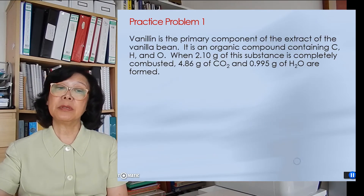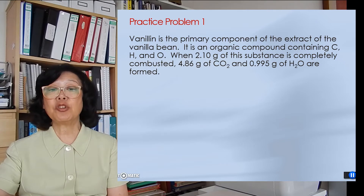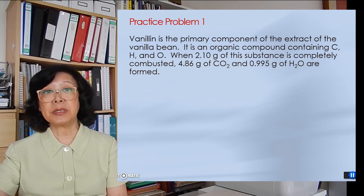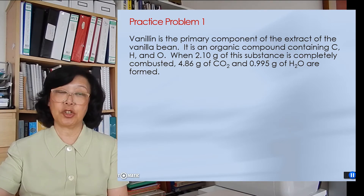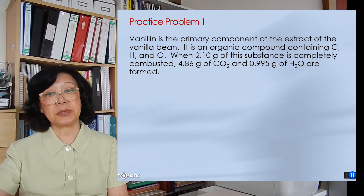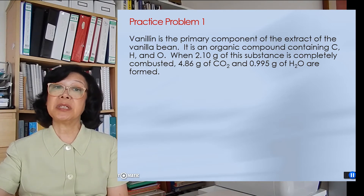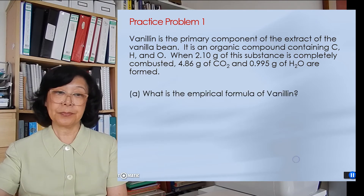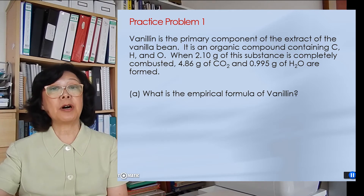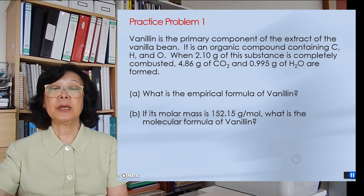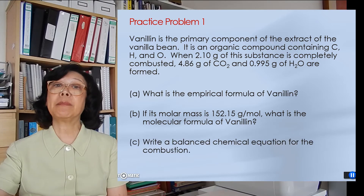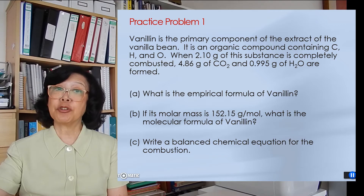Here's the problem about vanillin, the major component of vanilla bean. It is an organic compound made up of carbon, hydrogen, and oxygen. When 2.10 grams of the substance is completely burned, 4.86 grams of carbon dioxide and 0.995 grams of water are obtained. Use the data to find the empirical formula of vanillin. Given the molar mass is 152.15 grams per mole, find the molecular formula of vanillin. Finally, write a balanced chemical equation to show the combustion reaction.